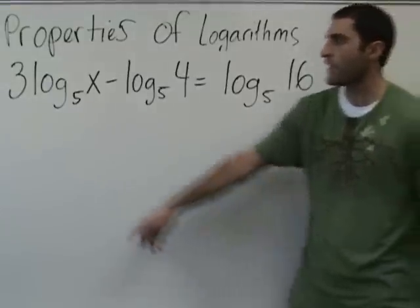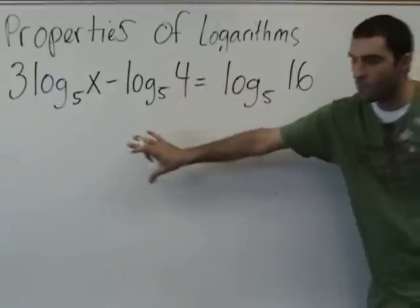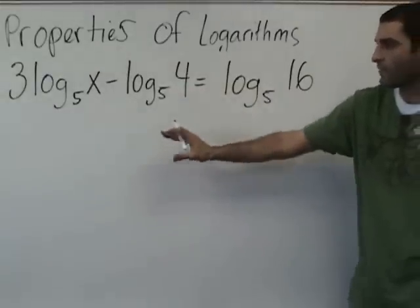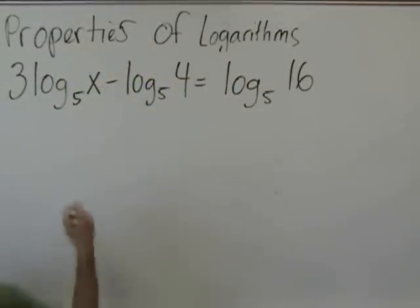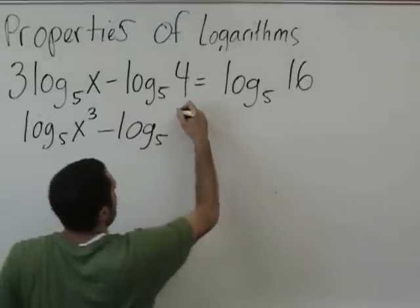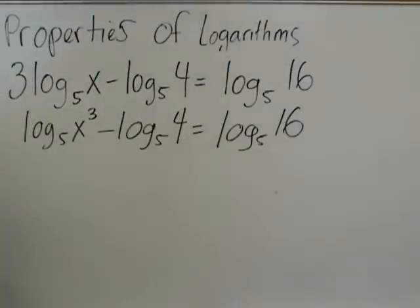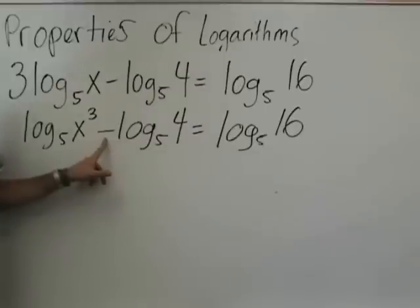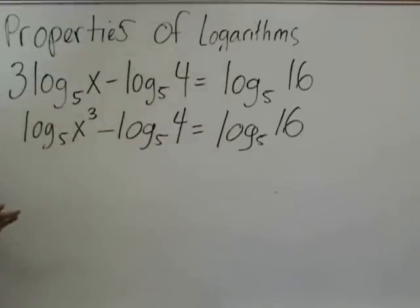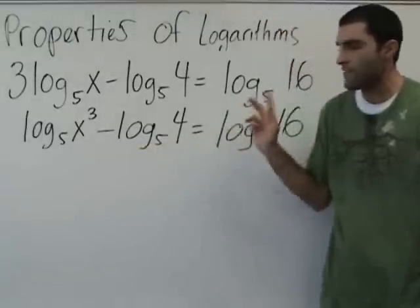How can we reformat this 3 so that we can condense this? Log base 5 x cubed. Right, so we're moving this 3 out to the x cubed. That's one of the properties of logs because what we're going to do is we're going to condense this so that in the end we'll remove both logs. We're condensing right now. So log base 5 x cubed minus log base 5 of 4 equals log base 5 is 16.